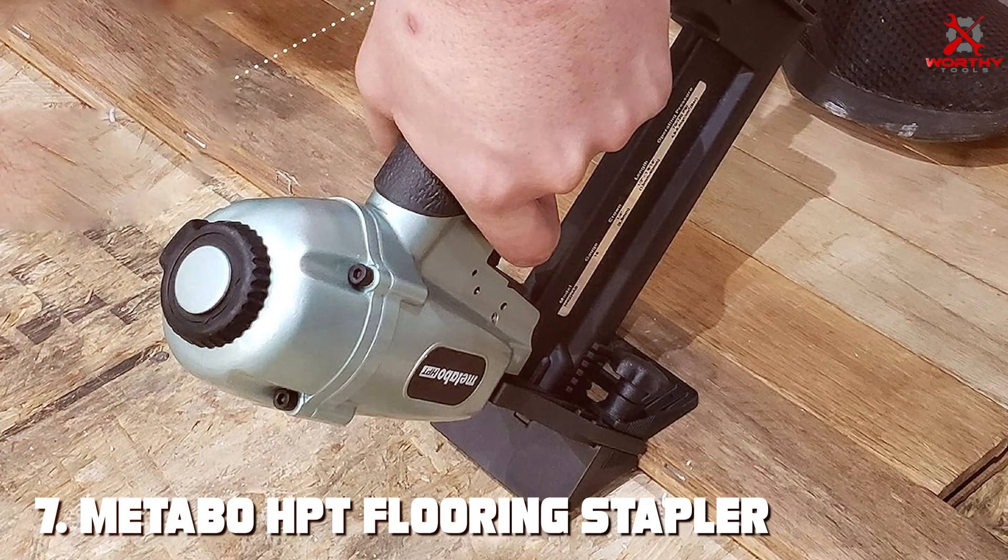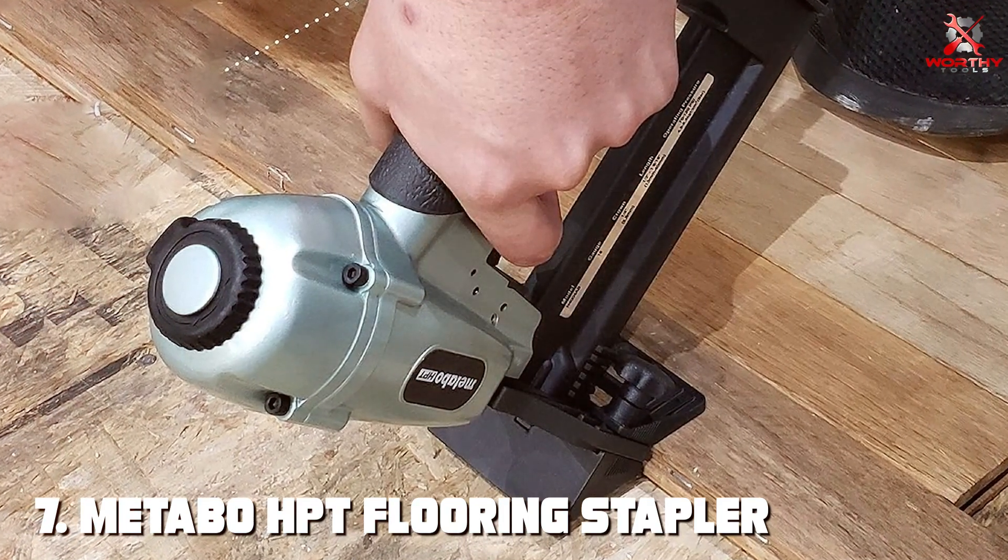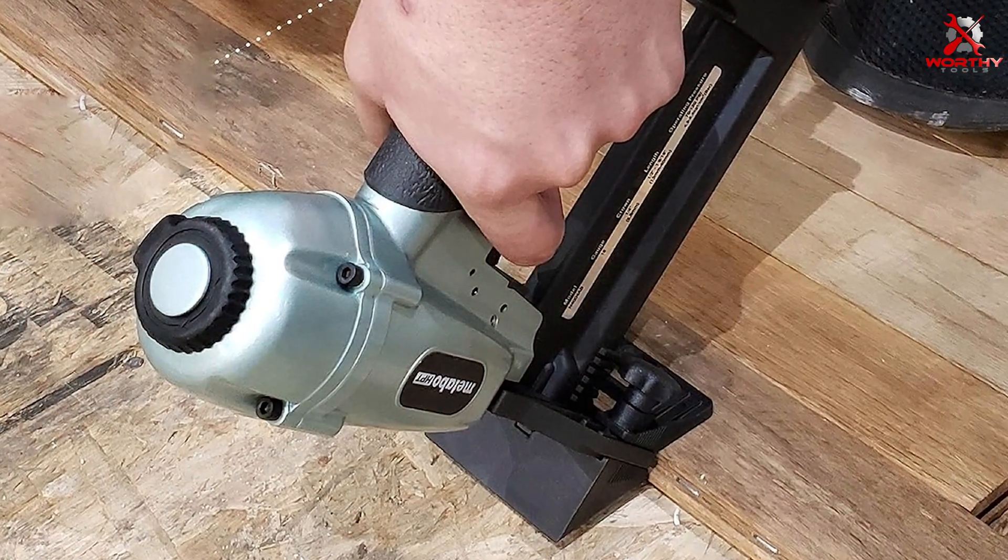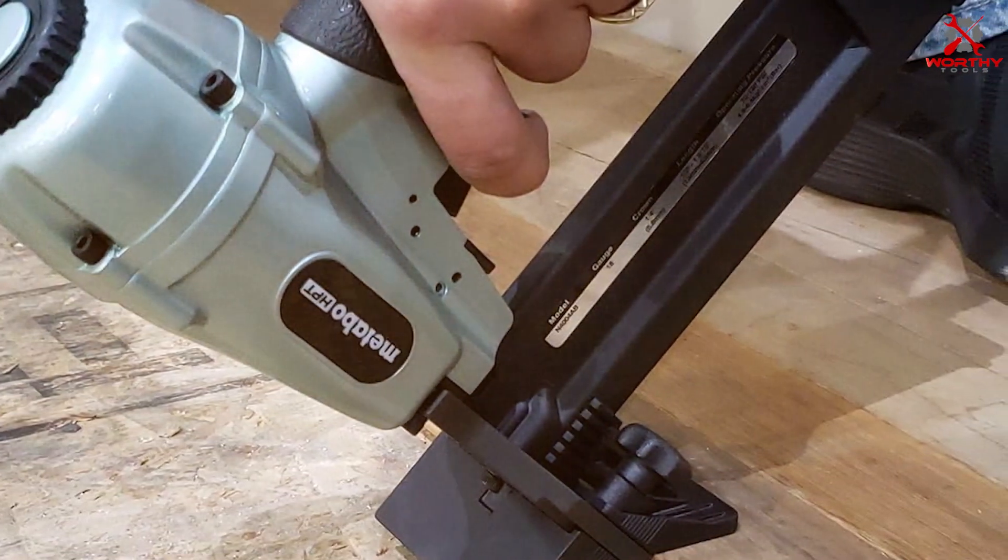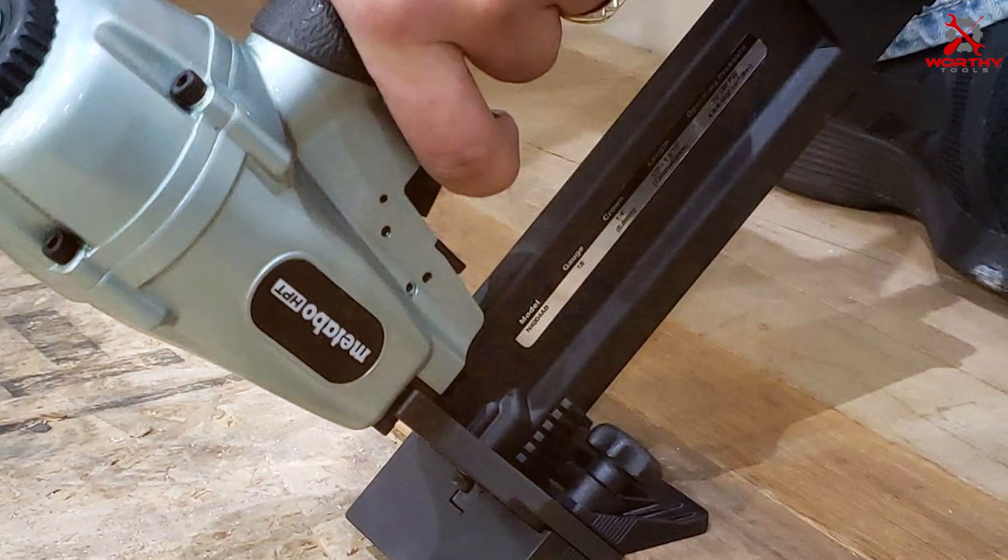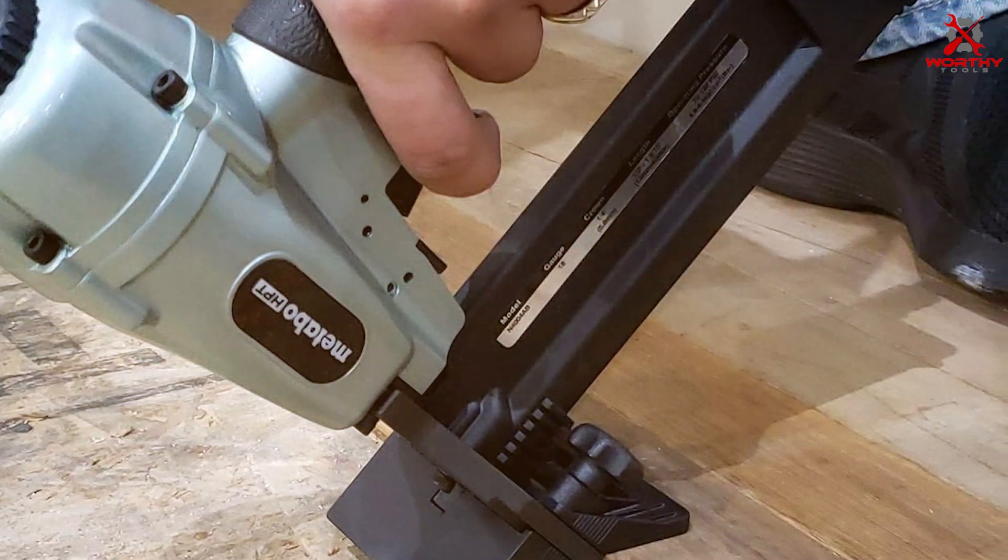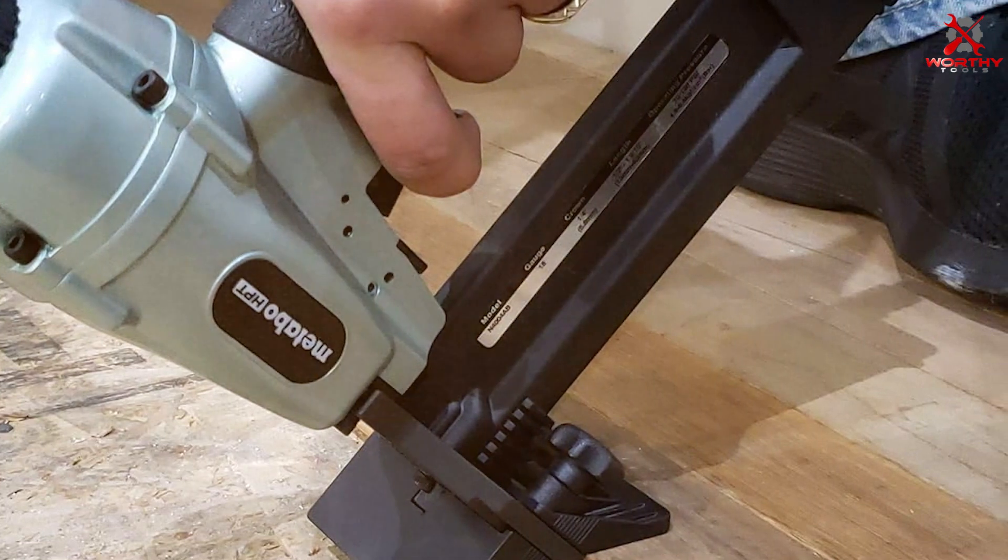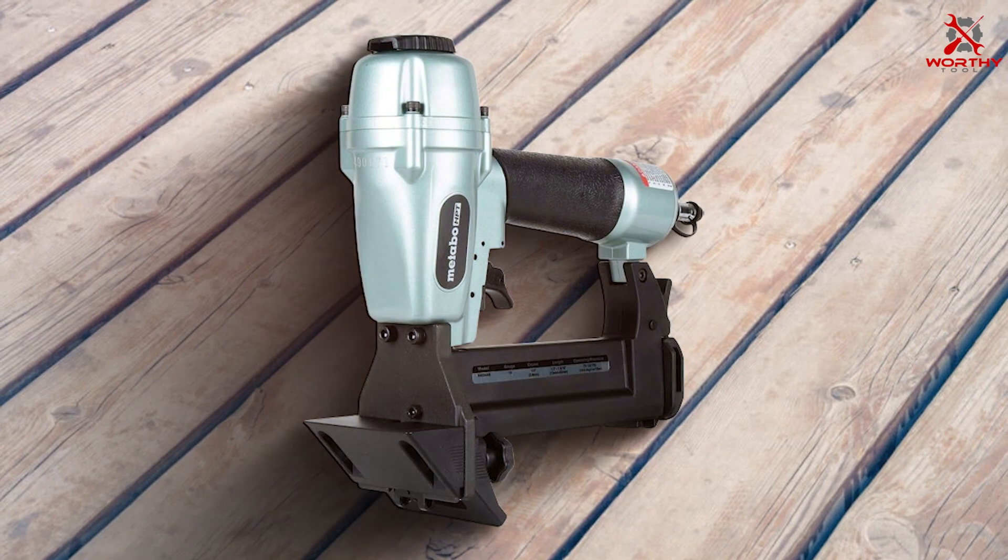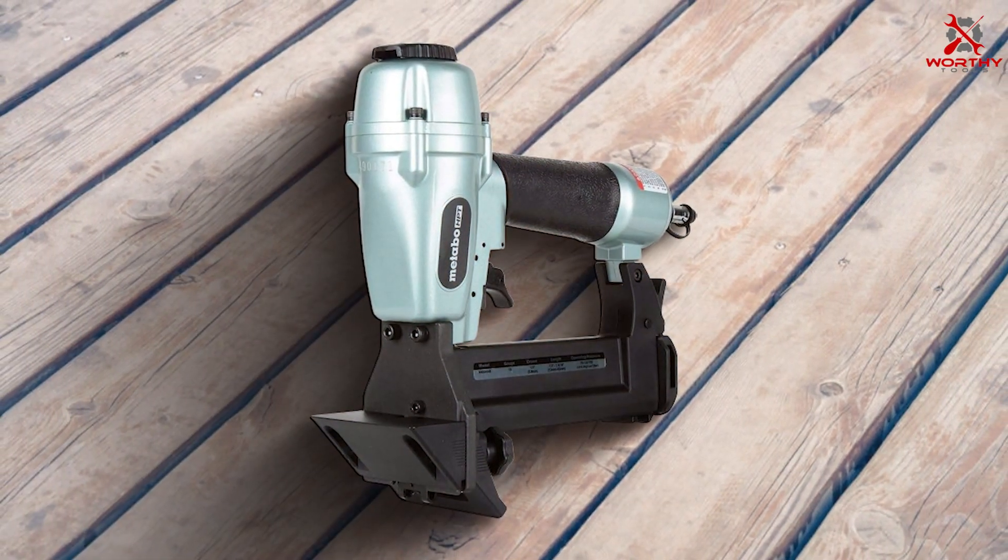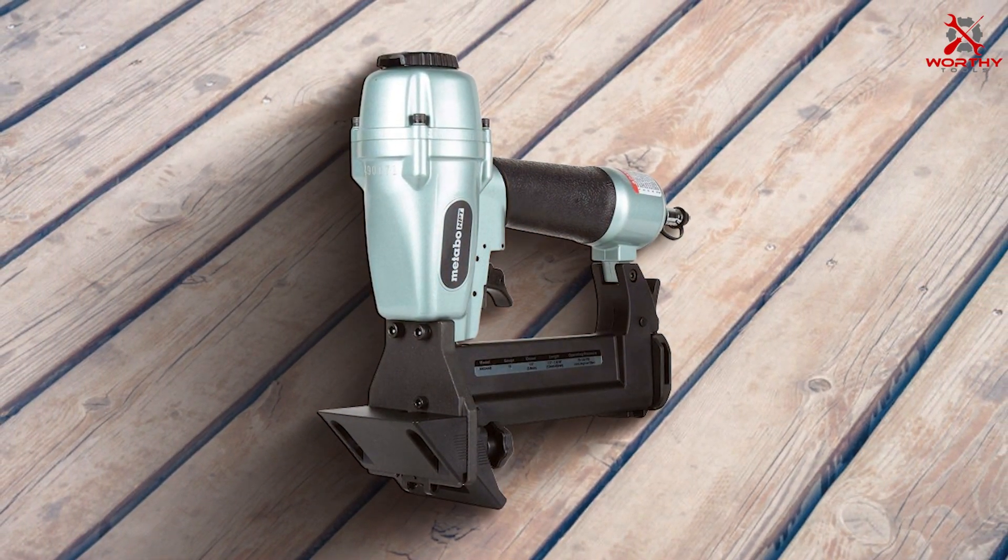Number seven: Metabo HPT Flooring Stapler N4004AB. The Metabo HPT N4004AB is a high-performance flooring stapler, renowned for its precision and reliability. This tool is designed to cater to the needs of both DIY enthusiasts and professional contractors. Its ergonomic design ensures comfortable handling, even during prolonged use, while the durable construction guarantees a long service life.